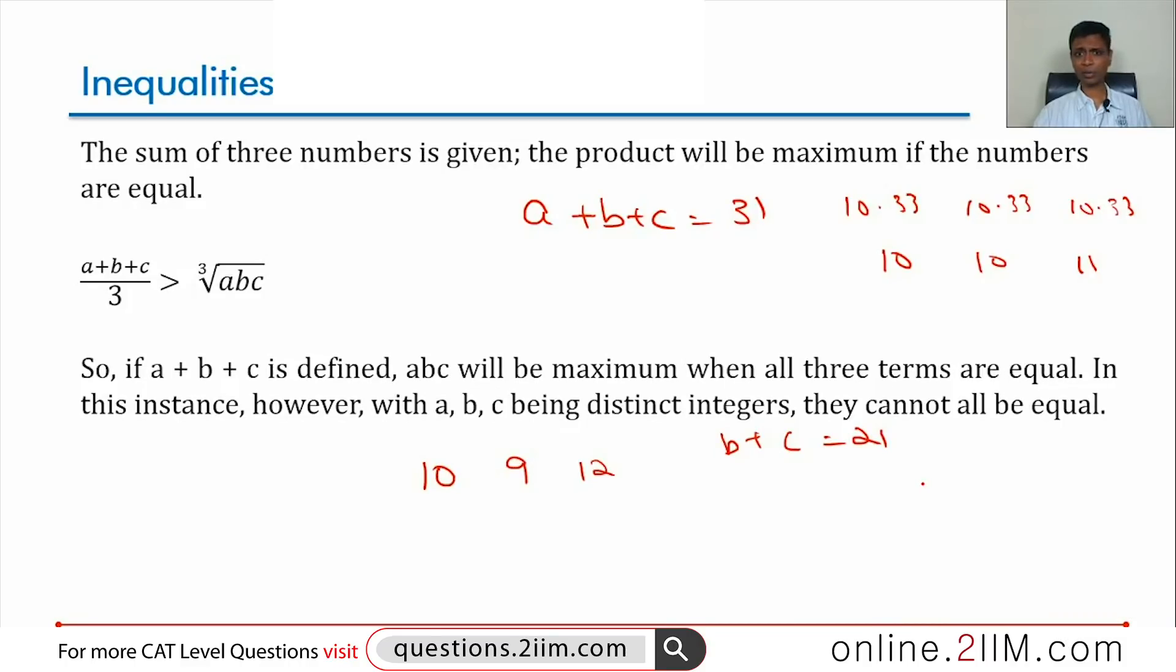Suppose 31 by 3 is 10.33. Suppose we said not looking for 10, let us keep 11. Then the other two numbers, B plus C should add up to 20. It cannot be 10 and 10. It cannot be 9 and 11. Let us select 8 and 12. That is the closest with 11 in it. So, we could have 8 into 11 into 12 or 10 into 9 into 12.